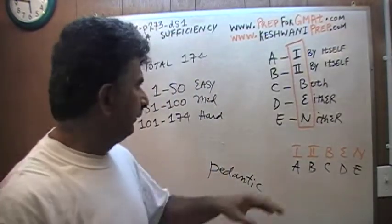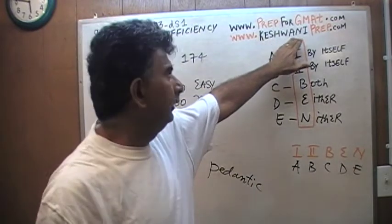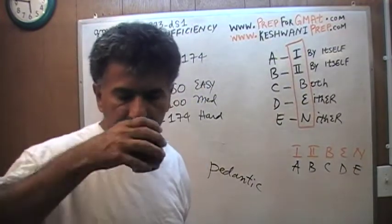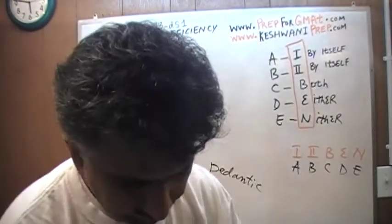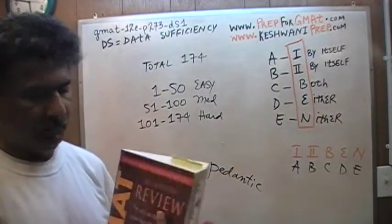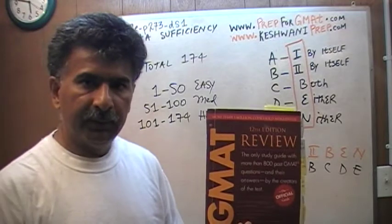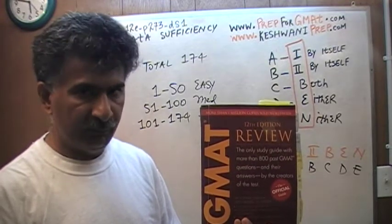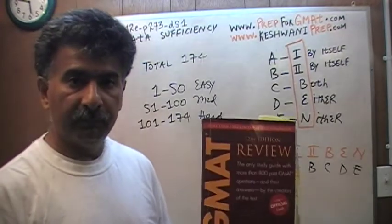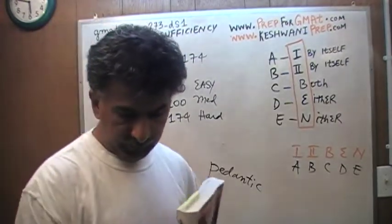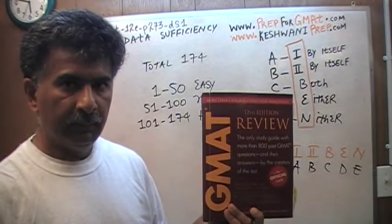Hello, my name is Keshwani, K-E-S-H-W-A-N-I. I am going to be solving math problems out of this book, GMAT Review 12th Edition. I'm about to begin the data sufficiency questions. There are 174 of them altogether, and I'm just starting out with question number one.